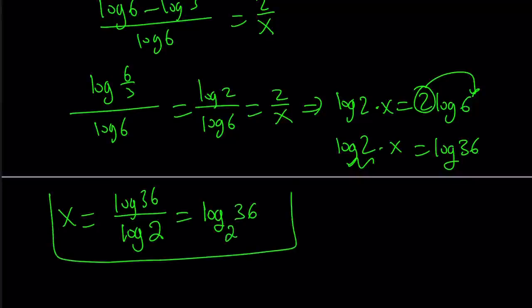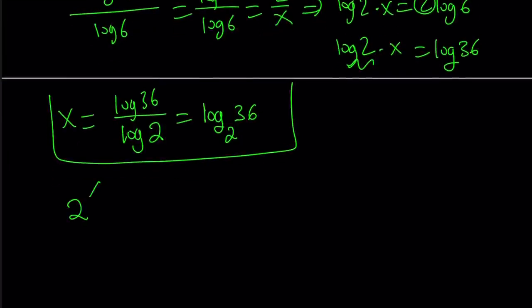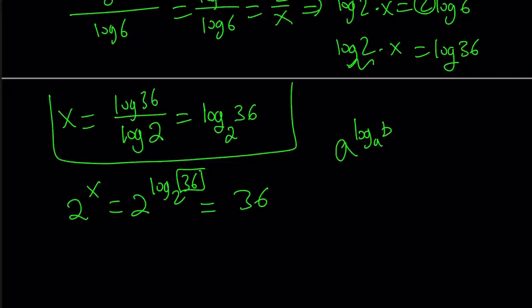But we're not looking for x. We're looking for 2 to the power x. So 2 to the power x is going to become 2 to the power log 36, but base 2. So that's going to be 36. Because we have the rule a to the power log b. If you have base a, then this becomes b. Alright. That's the property we used here. So the answer is 36.